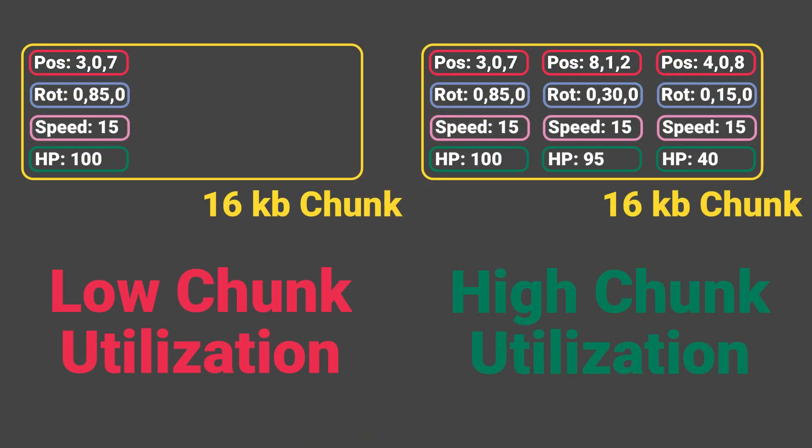Poor chunk utilization means we have a bunch of chunks but very few entities in them, so our entities are spread out across different places in memory — less optimized. The better we utilize our chunks by keeping them full, the more quickly we can iterate through entities without going to many places in memory. In most situations this isn't something to worry about, but if you're dynamically creating new archetypes and end up with 30,000 chunks each holding only three entities, that's going to be a problem.